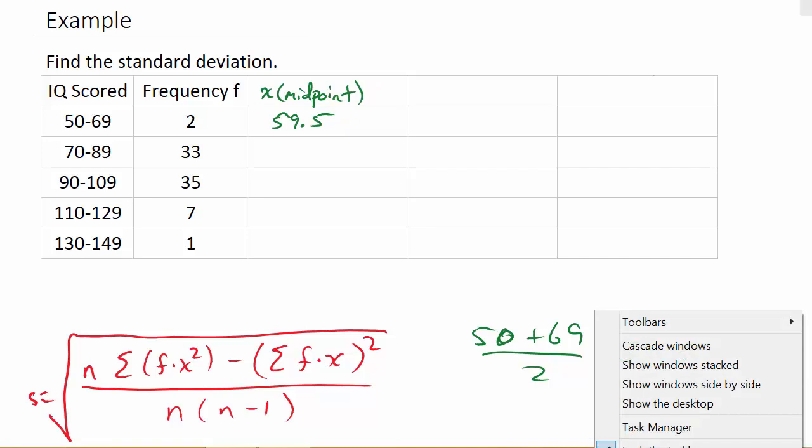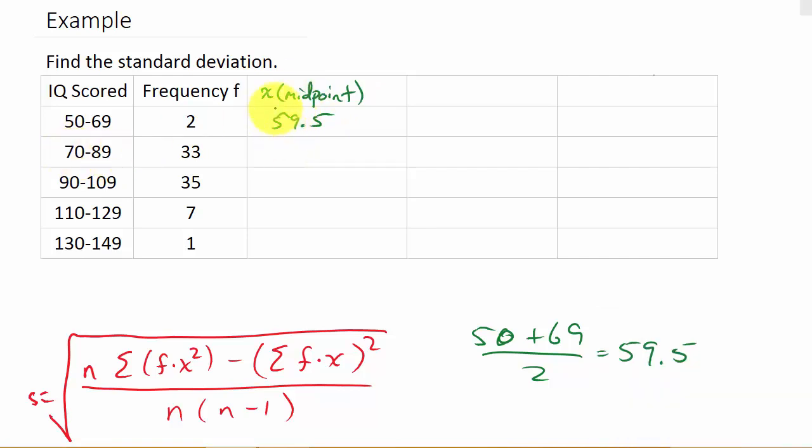And then the next one, the midpoint for 70 to 89, we just add 70 plus 89, divide that by 2. That is 79.5. And we'll do that the rest of the way down. And we would get 99.5, 119.5, and 139.5. Alright, so you can see I already have a table, but I don't have enough columns here. So I'm going to have to put some extra columns in here. So that's x.